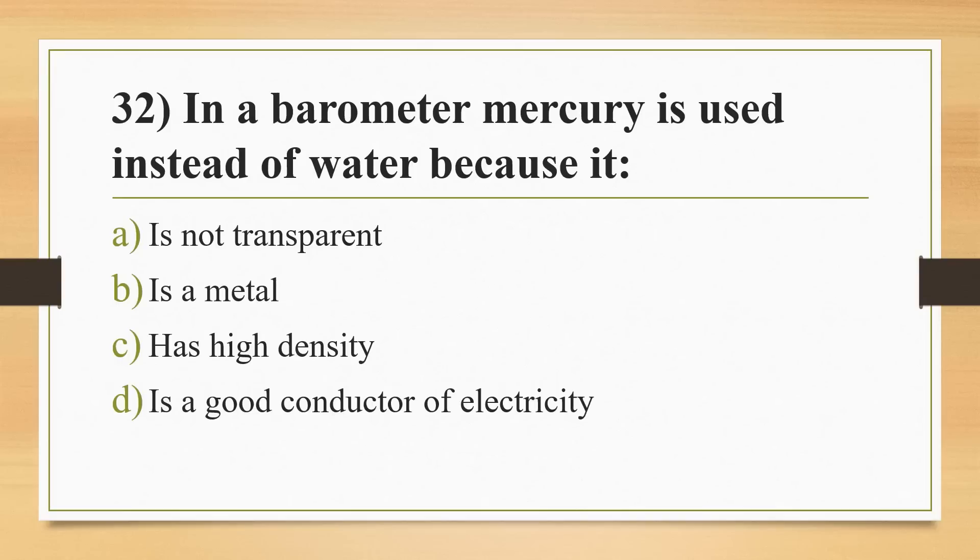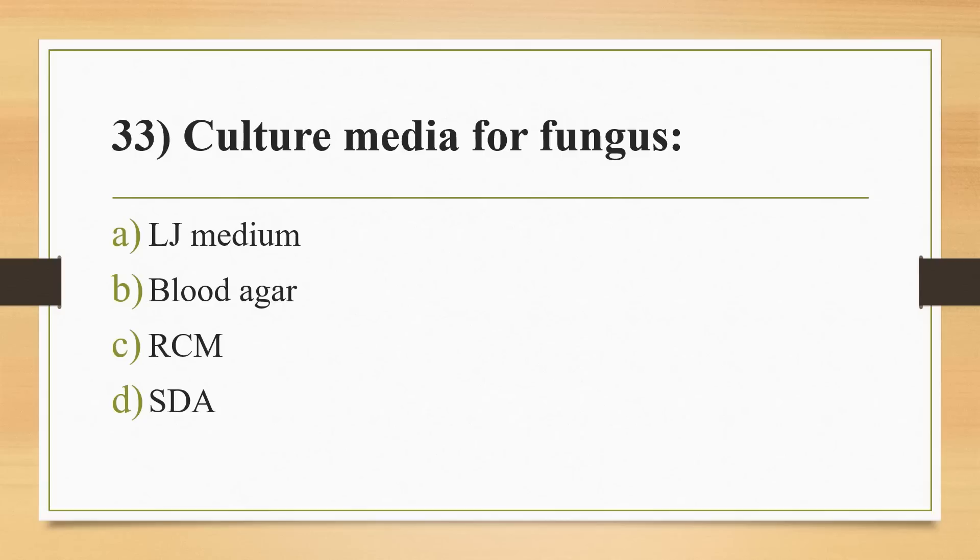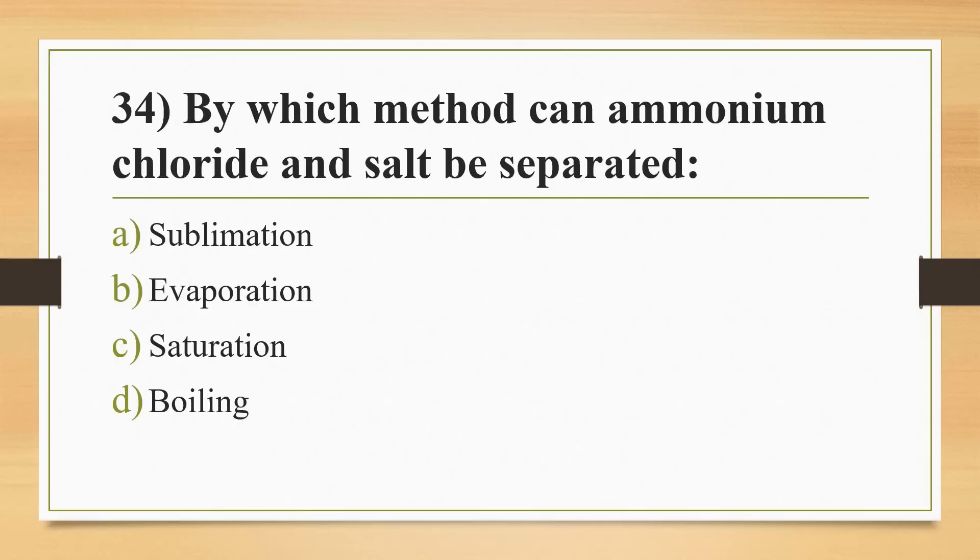Question number 32: in barometer, mercury is used instead of water because it? Options: is not transparent, is a metal, has high density, or is a good conductor of electricity. Answer is Option C, has high density. Question number 33: culture media for fungus? Options: LJ medium, blood agar, RCM, or SDA. Answer is Option D, SDA, that is Sabouraud dextrose agar.